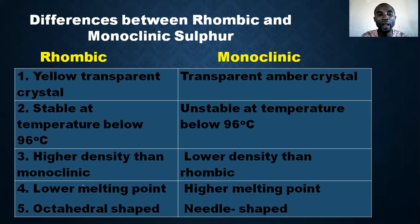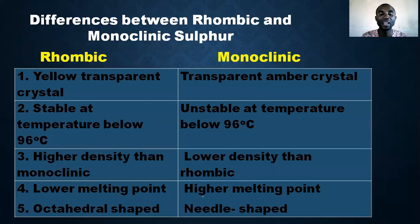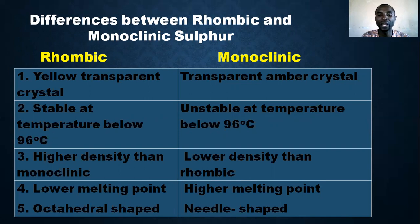Rhombic has a lower melting point while monoclinic has a higher melting point. Lastly, rhombic sulfur is octahedral in shape while monoclinic sulfur is needle-like in shape.